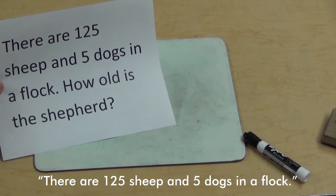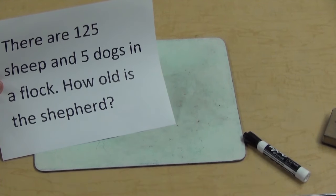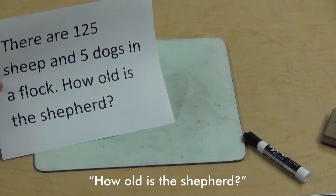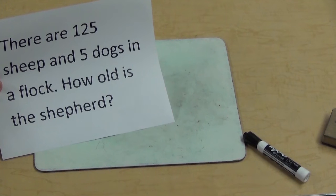There are 125 sheep and five dogs in the flock. How old is the shepherd? What?